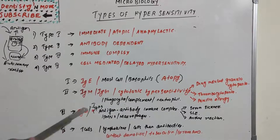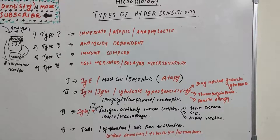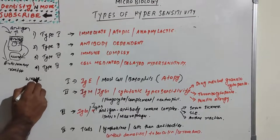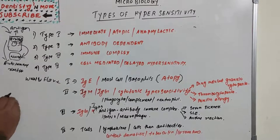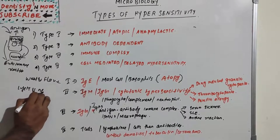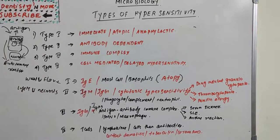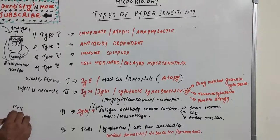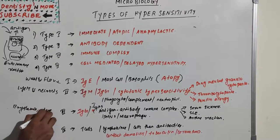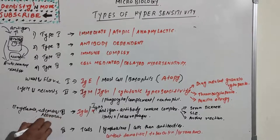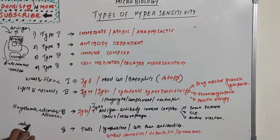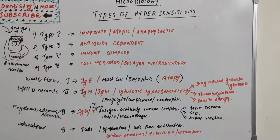Response times: Type 1 is 15 to 30 minutes; Type 2 is minutes to hours; Type 3 is 3 to 10 hours; Type 4 is very delayed — 48 to 72 hours. The most common appearances are: Type 1 — wheal and flare; Type 2 — lysis and necrosis; Type 3 — erythema, edema, and necrosis; Type 4 — erythema and induration. In the tuberculin test, induration present after 48 hours confirms a positive tuberculin or tuberculosis result.